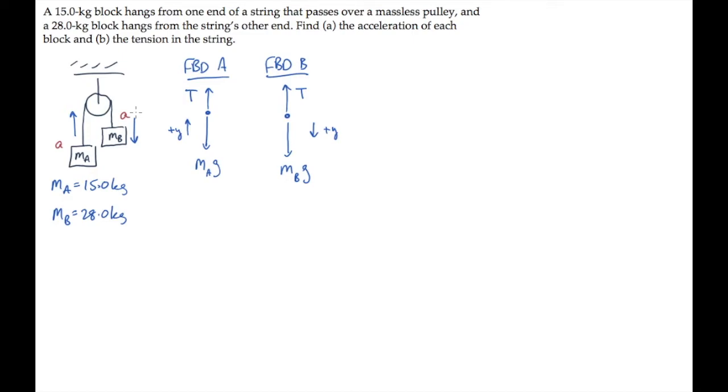Now we can solve part A by writing down Newton's second law: adding all the forces in the y direction equals mass times acceleration in that direction. We'll do this first for mass A, and then again for mass B. Summing the forces on mass A comes from the free-body diagram. Tension is in the positive direction, and weight is in the negative. And that equals mass of A times its acceleration.